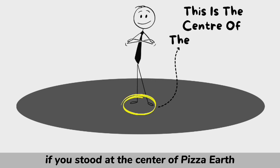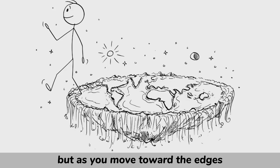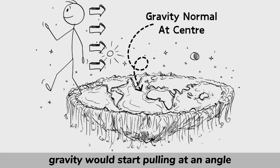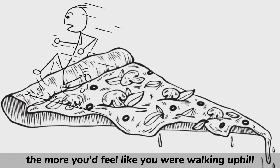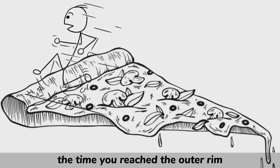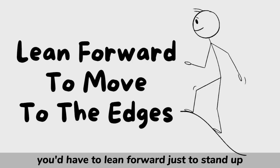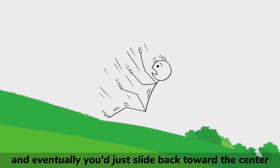If you stood at the center of pizza Earth, things would feel normal. But as you moved toward the edges, gravity would start pulling at an angle, dragging you back toward the middle. The closer you got to the edge, the more you'd feel like you were walking uphill. By the time you reached the outer rim, you'd have to lean forward just to stand up. And eventually, you'd just slide back toward the center.